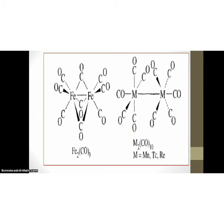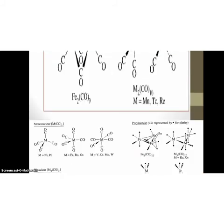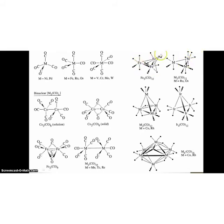Fe3CO9, Mn2CO10 are examples. It also shows polynuclear where there are more than two metal atoms present like Fe3CO12 and Mn6CO16. These are representations of polynuclear carbonyl compounds.